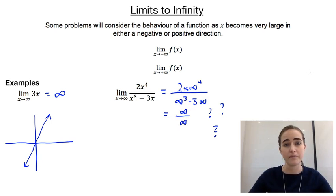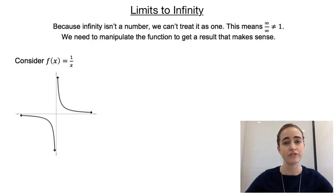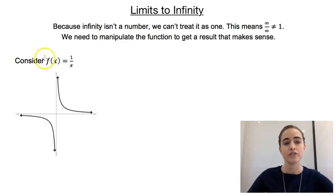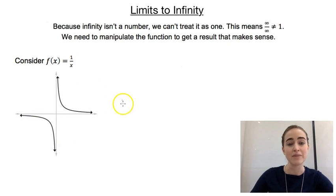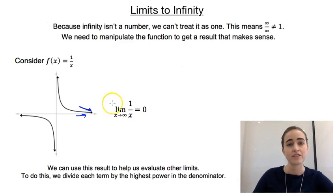So what we're going to do is manipulate the function so that it makes sense. To help us get around this infinity over infinity problem, we're going to consider the function 1 over x. That function looks like a hyperbola. If we look at the limit as x approaches infinity, we can see that our function is getting closer and closer to 0. So we'll write that formally as: the limit as x approaches infinity of 1 over x is 0. We can use that result to help us evaluate other limits.